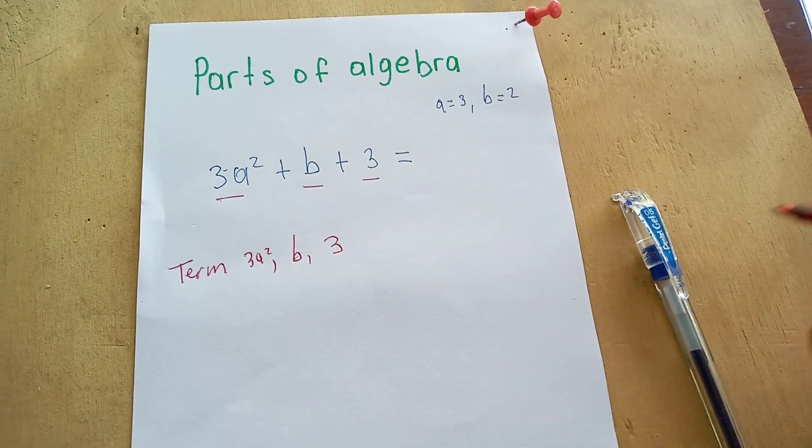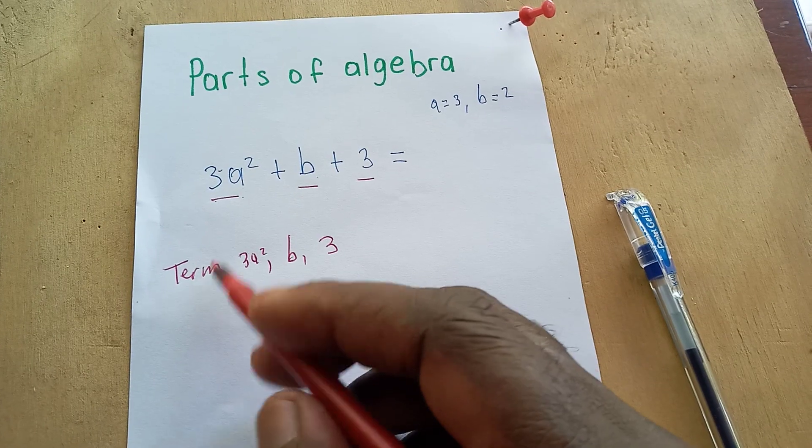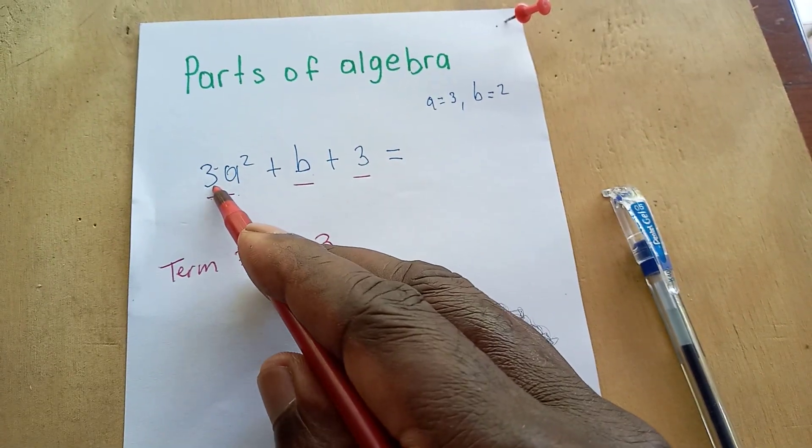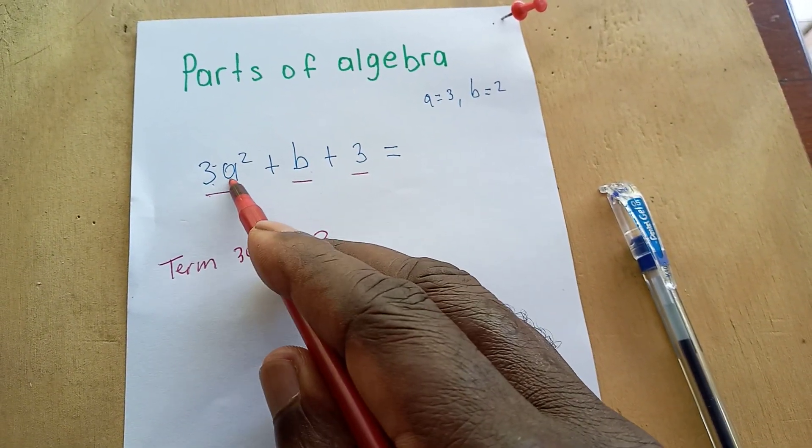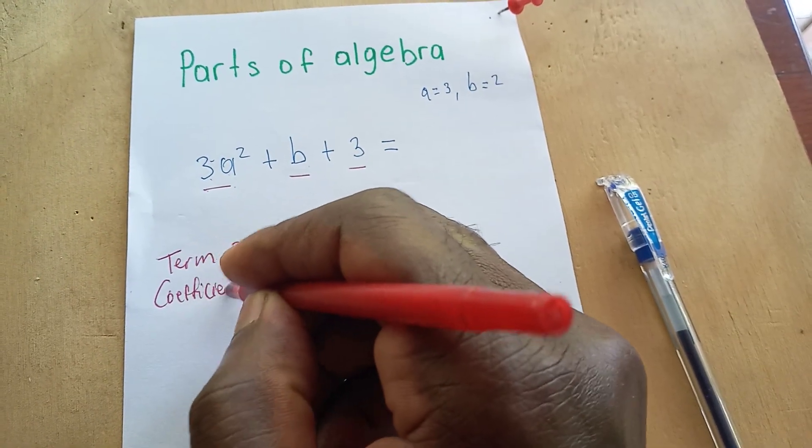So there's no like term. This is a coefficient - a number which is in front of the variable is the coefficient. So we have a coefficient. It is the number in front of the variable, which is 3.